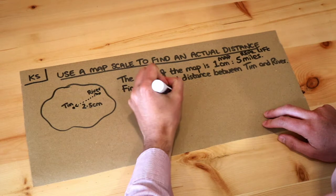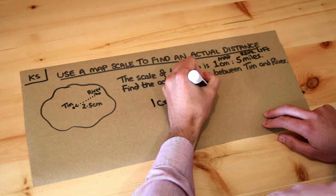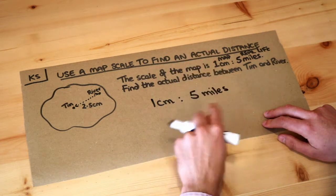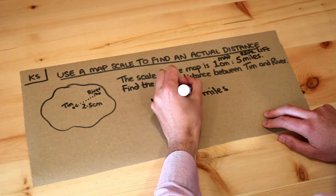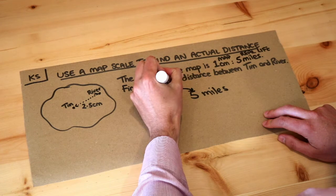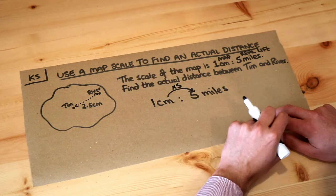Now if we write that out again we can see that to get from the map to real life we need to multiply that one by five and also change the centimeters to miles.